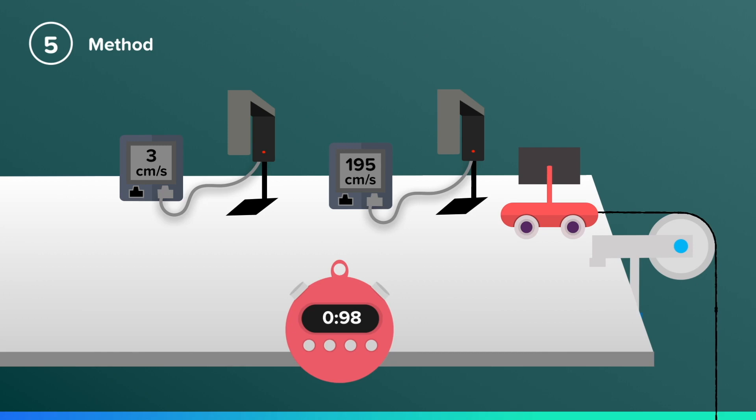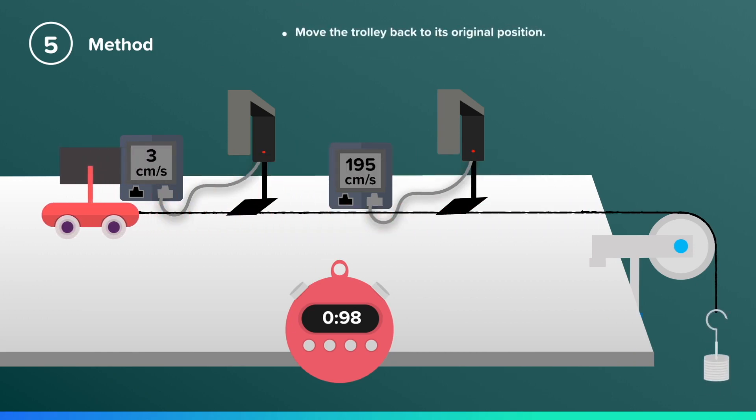Move the trolley back to its original position. Remove one 10-gram mass and place it back on the trolley. The reason you do this is to keep the mass constant. Record your initial and your final velocities, and the time taken to move between the two light gates.